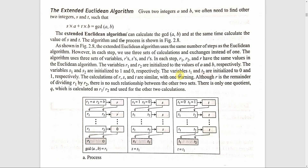In the last video, when we discussed the extended Euclidean algorithm, that is gcd(a, b) equal to s into a plus t into b — this formula is represented by the values of s and t.